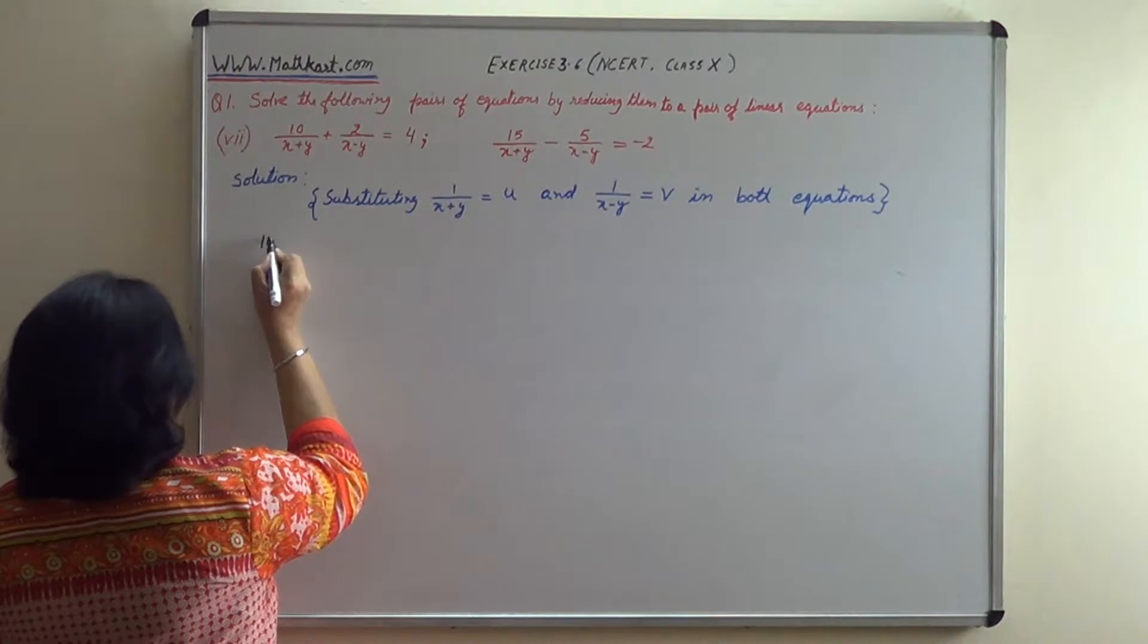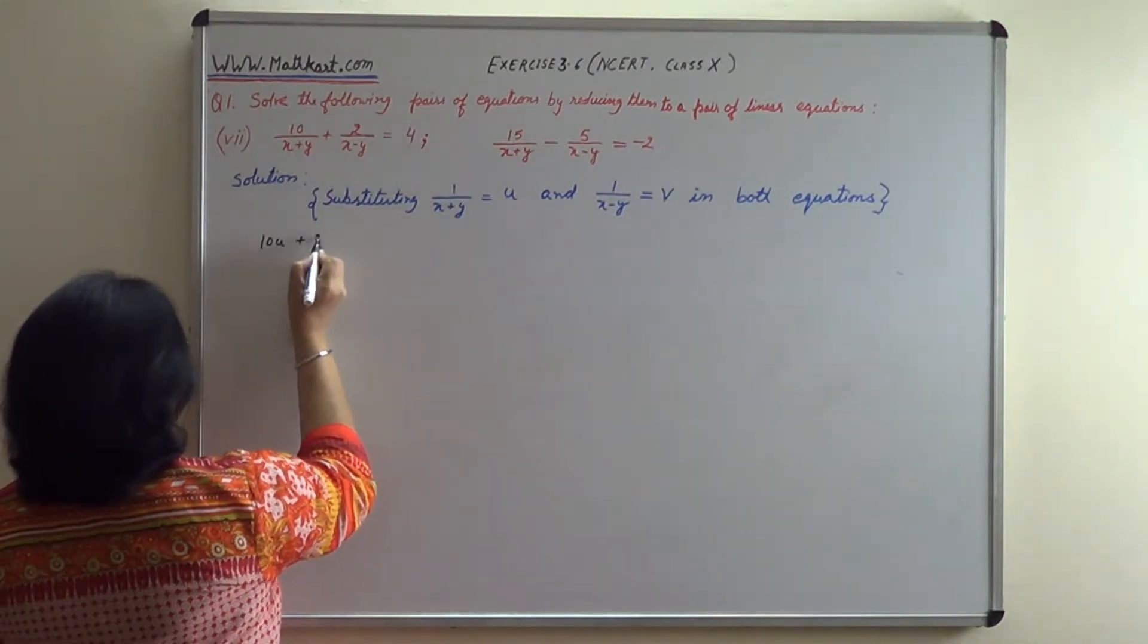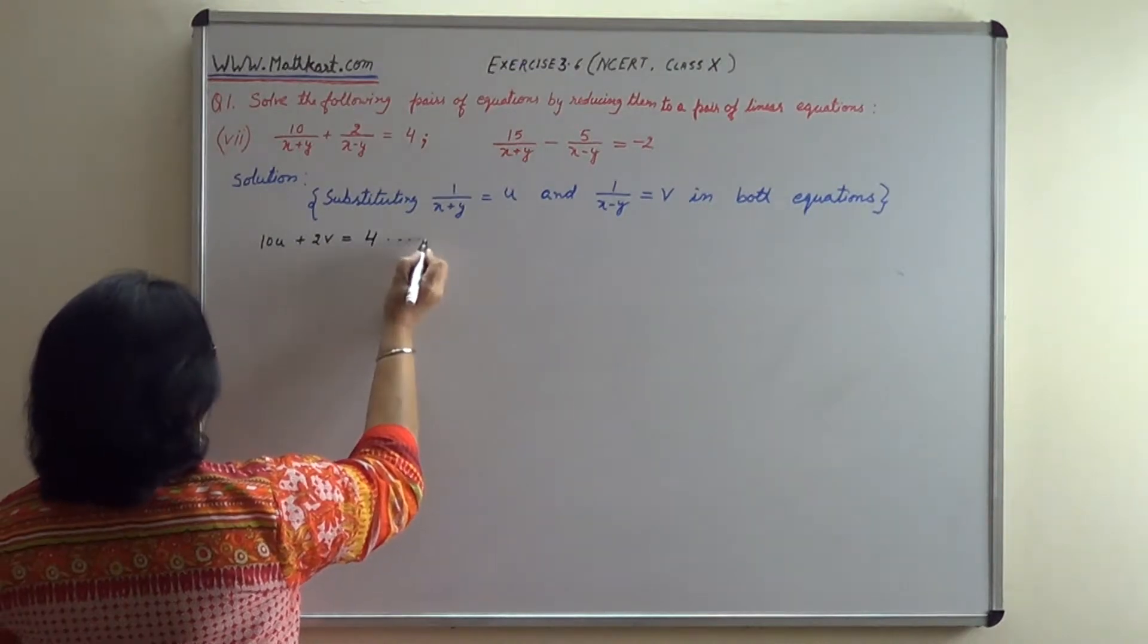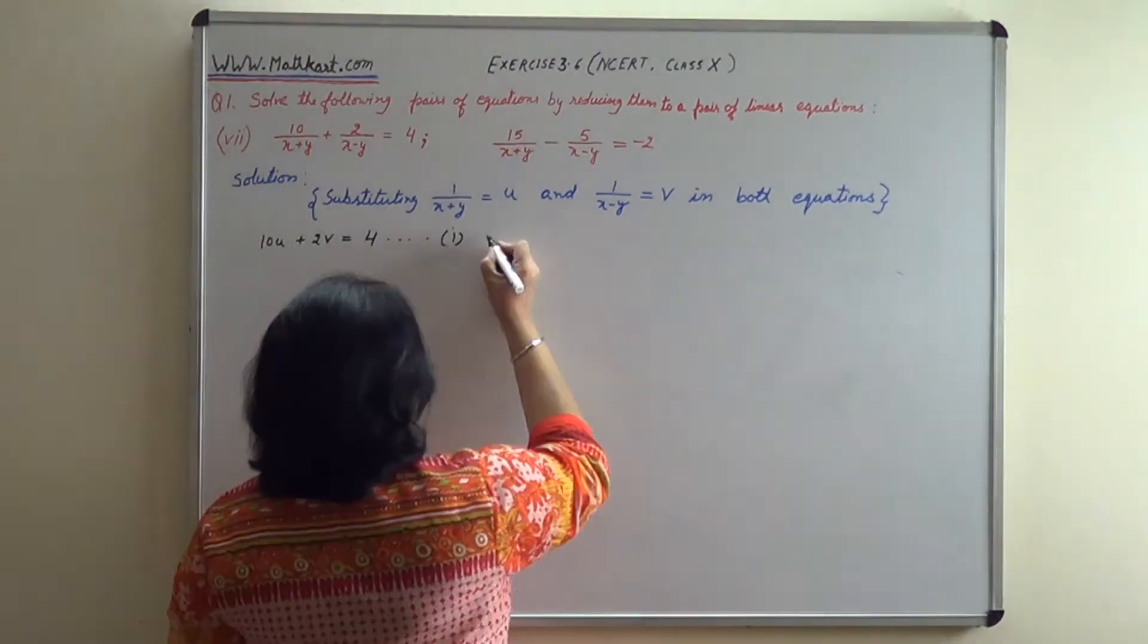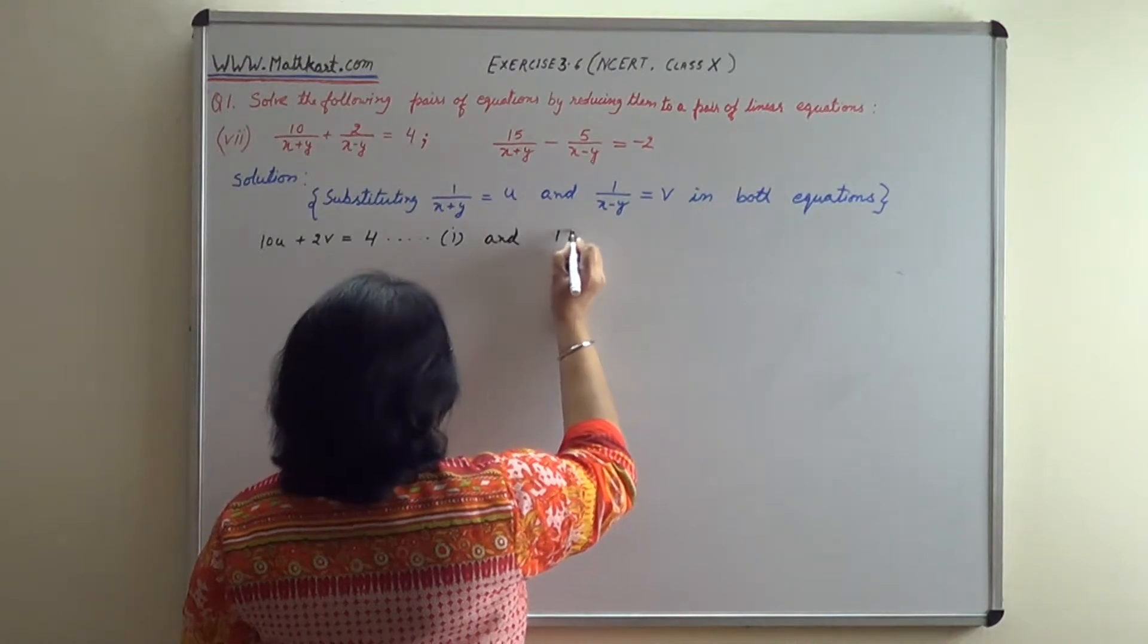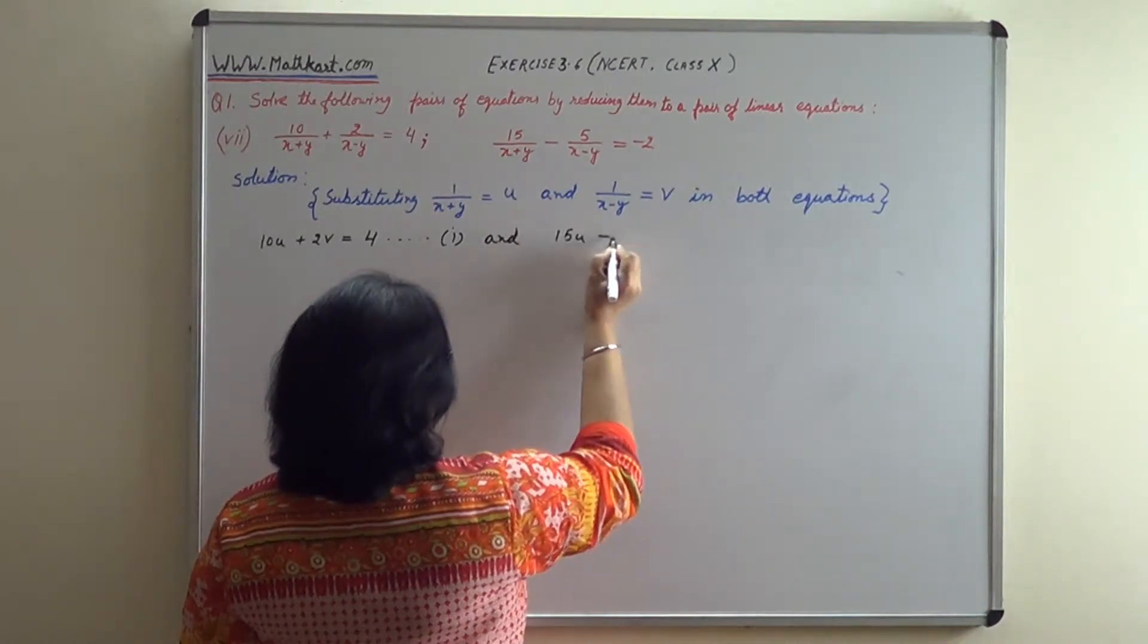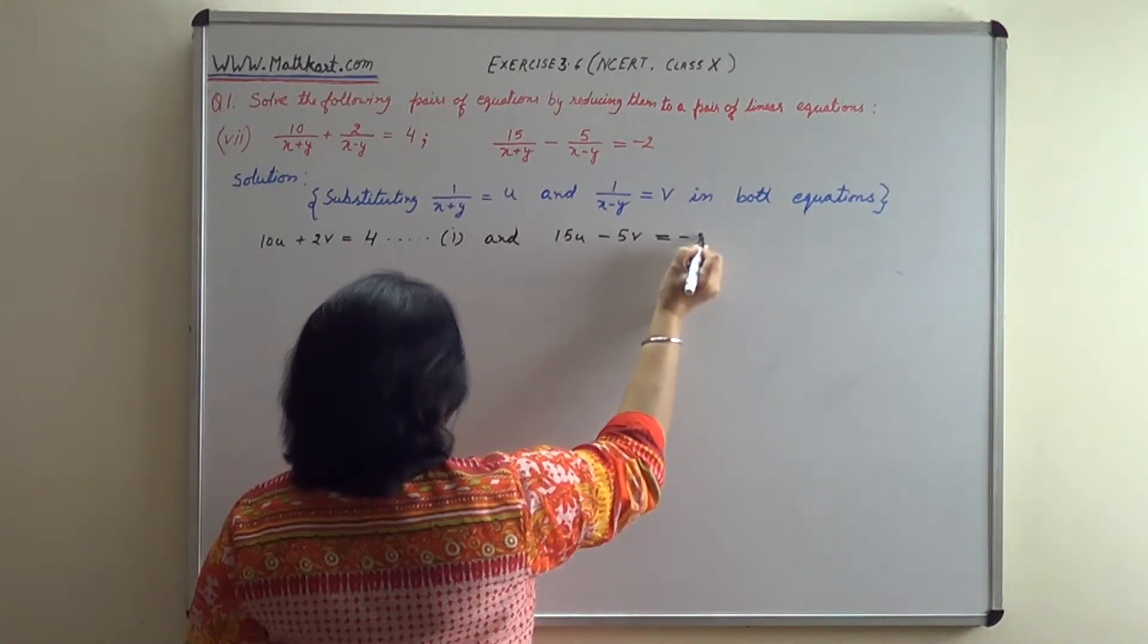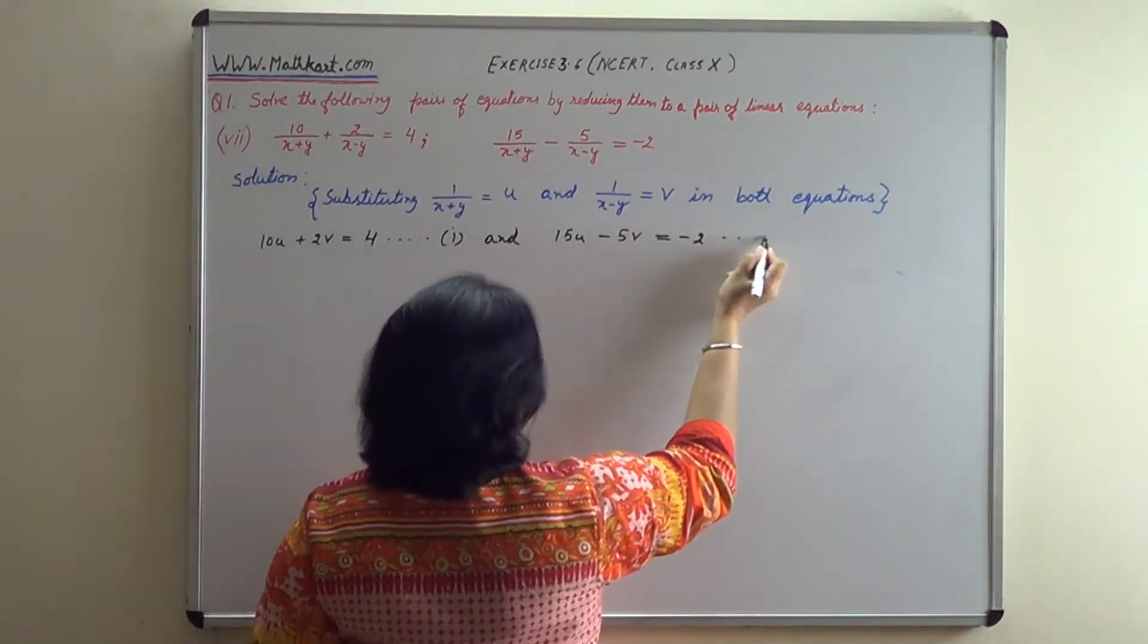10u plus 2v equals 4. This is equation 1. And 15u minus 5v equals minus 2. This is equation 2.